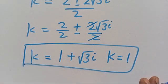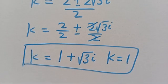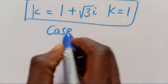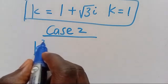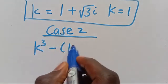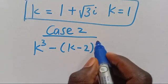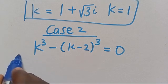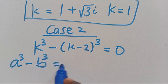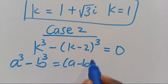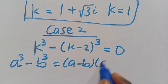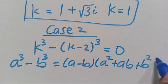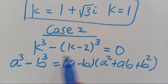Now let's check Case 2. We have K to the power of 3 minus K minus 2 in parentheses to the power of 3 equals 0. Recall that A to the power of 3 minus B to the power of 3 equals A minus B in parentheses multiplied by A squared plus AB plus B squared.